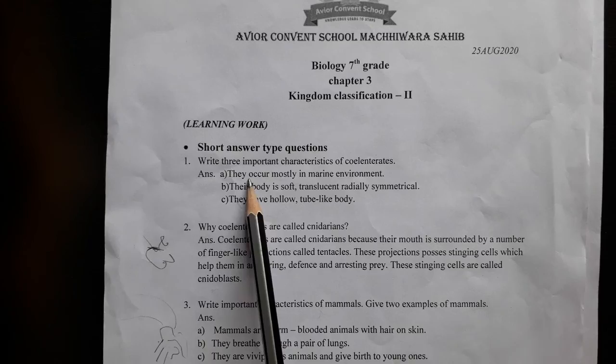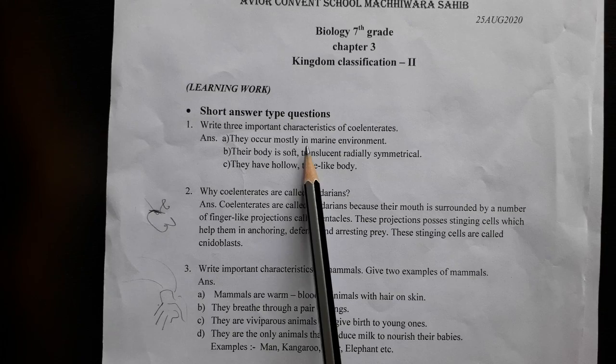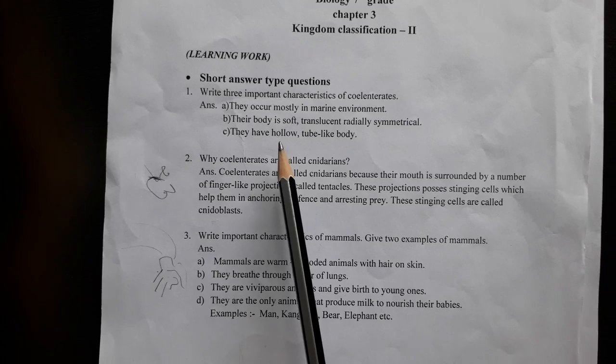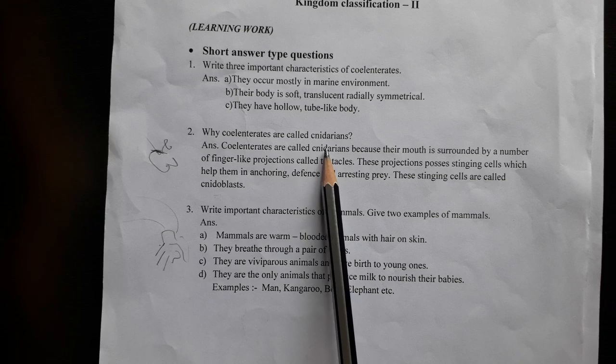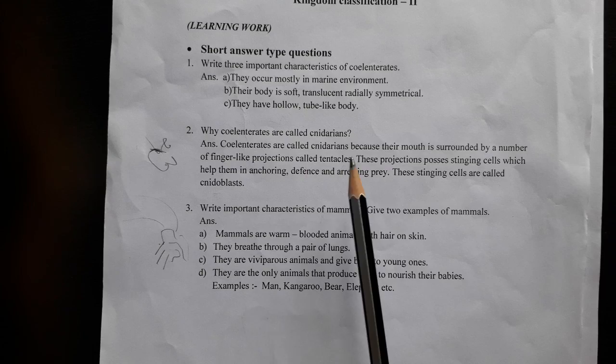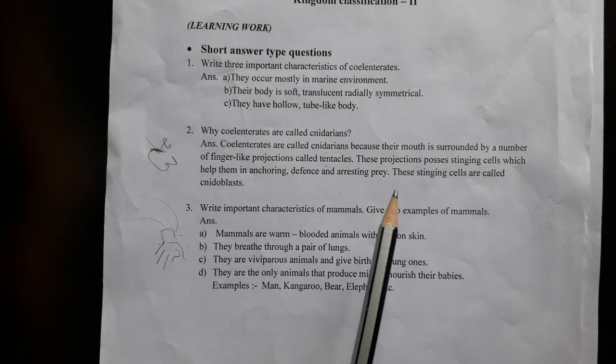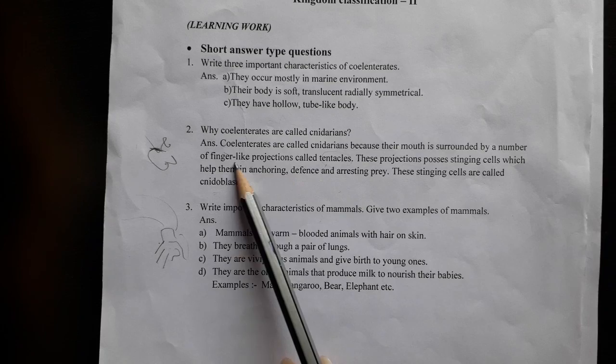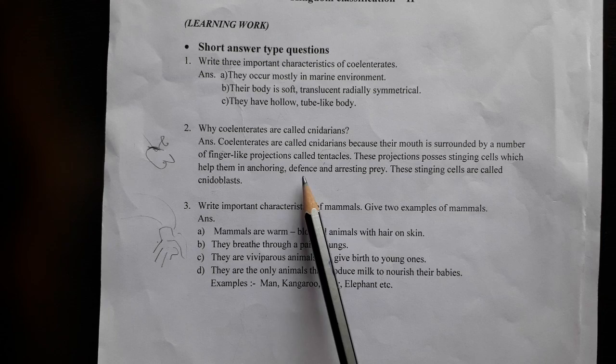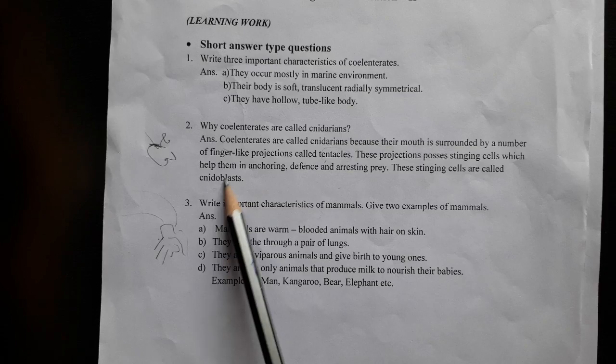Three important characteristics of Cnidaria: they occur mostly in a marine environment; their body is soft and translucent; they have a hollow tube-like body. Cnidarians are also called nidarians because their mouth is surrounded by stinging cells called cnidoblasts.